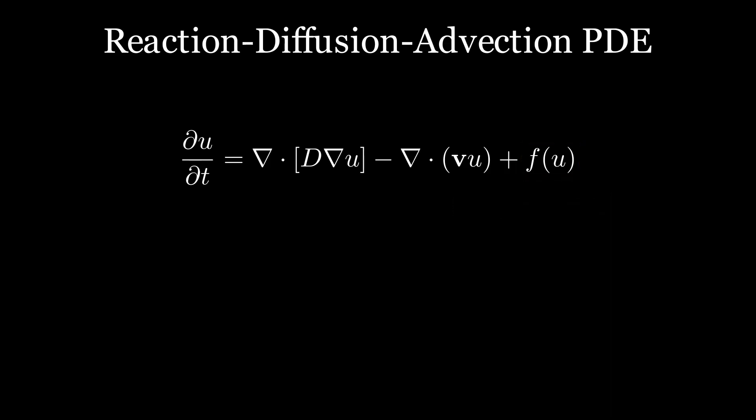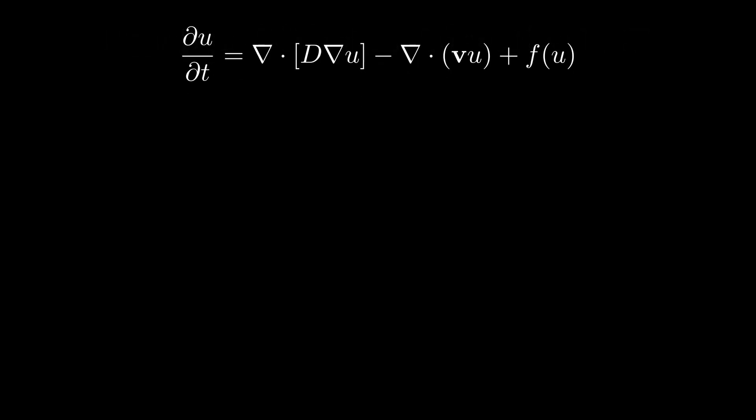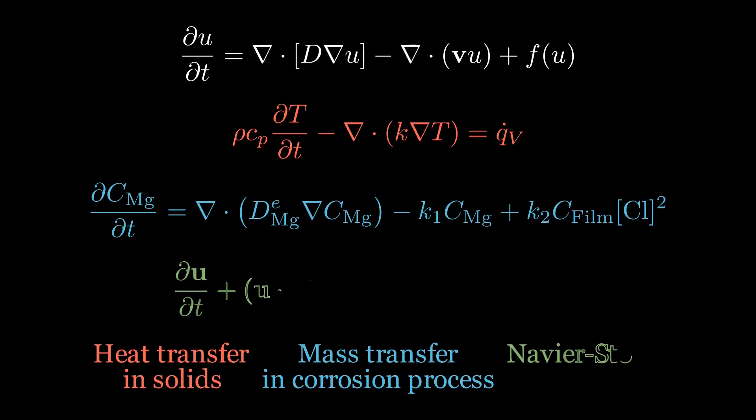Let's have a look at some examples of this equation with different shapes but with the same structure: heat transfer in solids, mass transfer in corrosion process—in this case magnesium corrosion and sodium chloride—and Navier-Stokes equations for describing the fluid flow behavior.